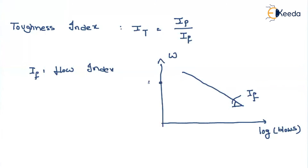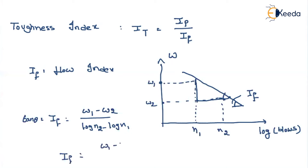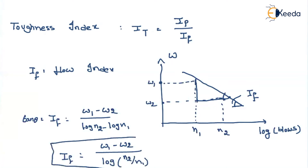Let us say if your water content is w1, corresponding to that, the number of blows required are n1. Similarly, corresponding to water content w2, the number of blows required equal n2. The slope — that is tan theta — equals If. That will be equal to w1 minus w2 divided by log n2 minus log n1. So, the flow index If equals w1 minus w2 divided by log of n2 divided by n1. By using this relation, we can find out the flow index.